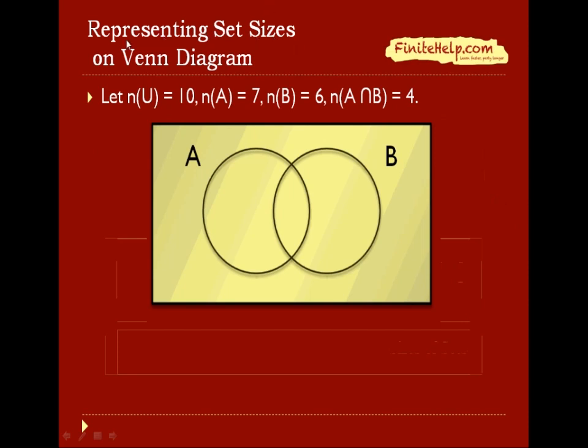In this section, we are going to represent set sizes on the Venn diagram. So here, we'll let the number of elements in the universal set be 10, the number in A to be 7, the number in B to be 6, and the number of A intersect B to be 4.